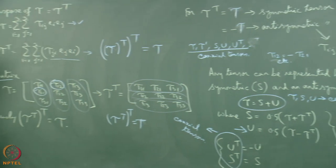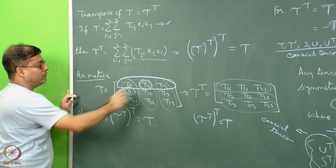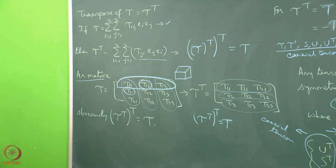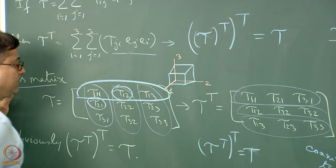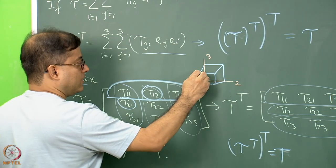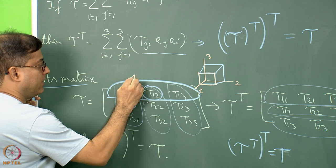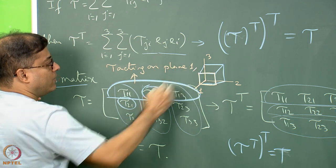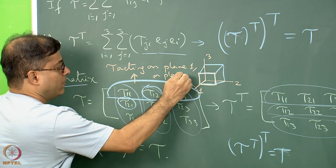Now let us understand the physical meaning of the terms within each row of the matrix. If you recall the diagram with axis 1, axis 2, and axis 3: tau_11, tau_12, and tau_13 all share the first suffix 1, meaning these three stresses are all acting on plane 1 — the plane perpendicular to axis 1, also called plane 2-3.